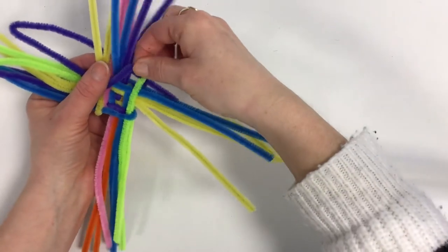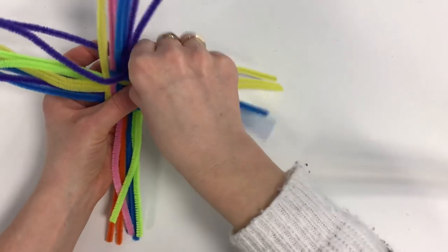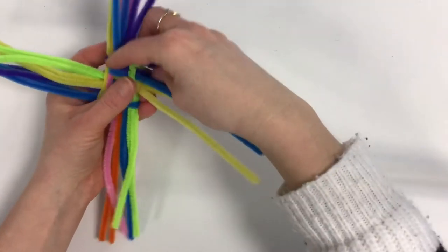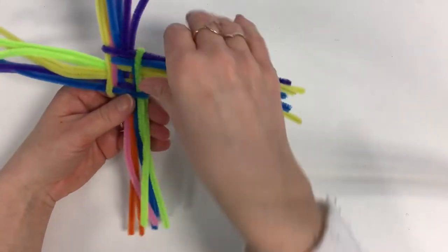So both legs, pull it through and you can pop that down again and tighten it all up.